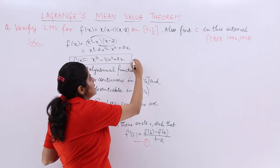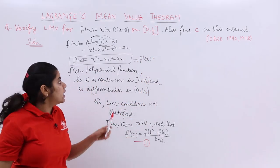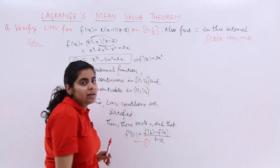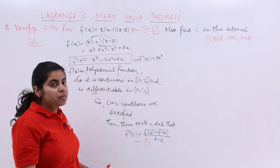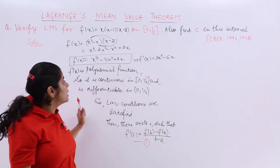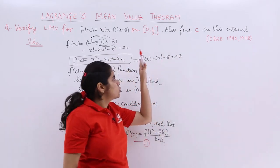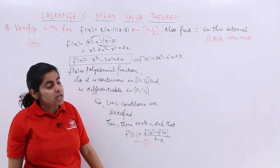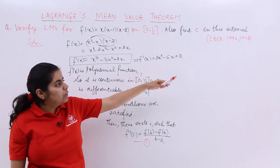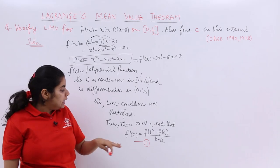To find F'(C), we first need F'(x). Differentiating f(x) = x³ - 3x² + 2x: the derivative of x³ is 3x², the derivative of -3x² is -6x, and the derivative of 2x is +2. So F'(x) = 3x² - 6x + 2. Then F'(C) is obtained by substituting C in place of x: F'(C) = 3C² - 6C + 2.